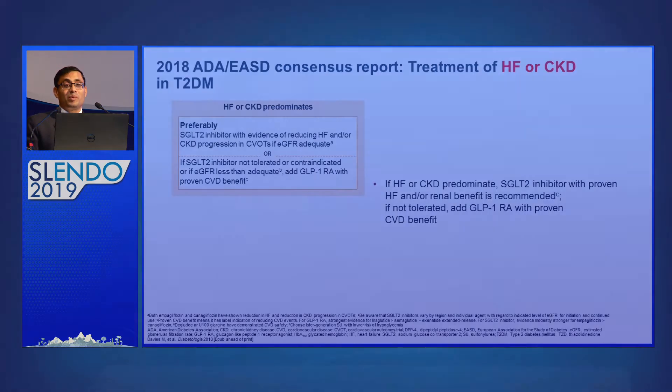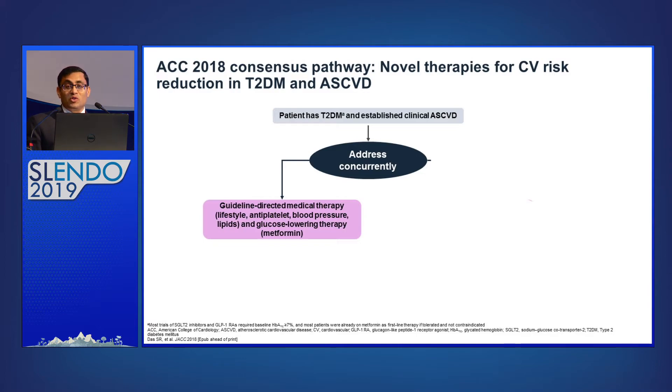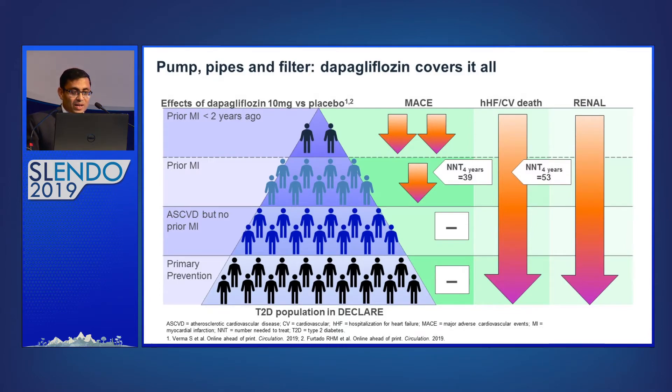If the patient has neither CVD nor CKD, then it is your choice depending on what benefits you require from the drug. The ACC 2018 consensus states: if you have established cardiovascular disease, guideline-directed medical therapy — in addition to anti-platelets and blood pressure reduction — the glucose-lowering therapy should also focus on reducing cardiovascular endpoints. It can be SGLT2 inhibitors or GLP-1 agonists.